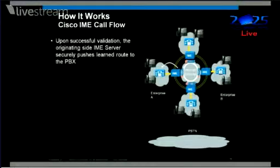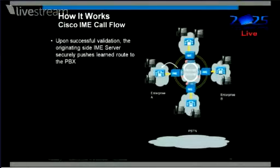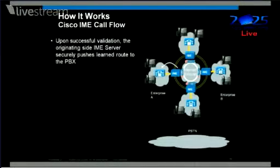Once this proof point has happened, the IME server pushes back into the PBX: I know a route over the internet. It's a virtual SIP trunk that's just been dynamically discovered — nothing was configured about it. The IT person didn't have to go do anything to add enterprise B. The next time that someone inside enterprise A dials that same number, it knows a new route that's been validated over the internet.